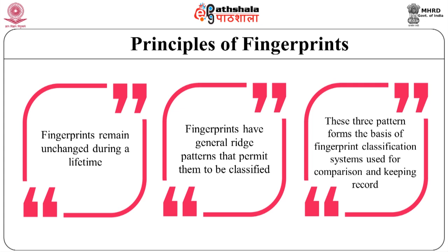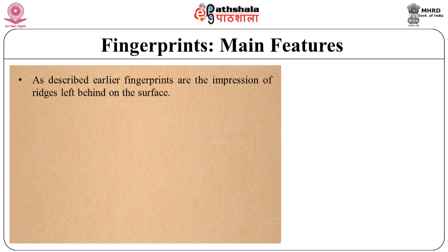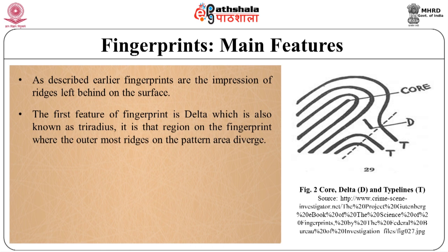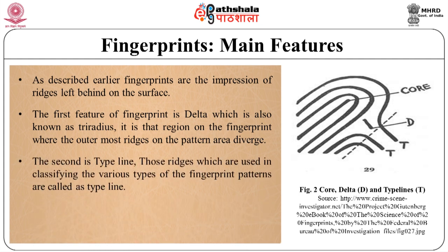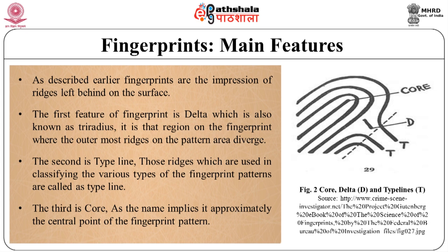Before defining various types of fingerprint patterns, it is important to understand the basic fingerprint features. The pattern area is the outer boundary of fingerprint patterns in which core, delta, and type lines are present. The first feature is the delta, also known as tri-radius: it is the region where the outermost ridge on the pattern area diverges, causing a space where type lines exist. Type lines are those ridges used in classifying the various types of fingerprint patterns. The core is approximately the central point of the fingerprint pattern.